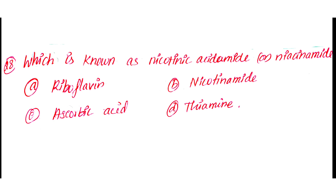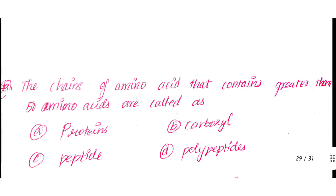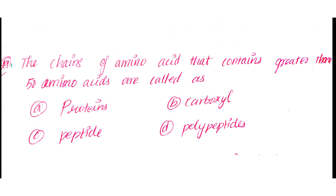Question number 29: Chains of amino acids that contain greater than 50 amino acids are called as. Option A: Proteins. Option B: Carboxyl. Option C: Peptide. Option D: Polypeptides.